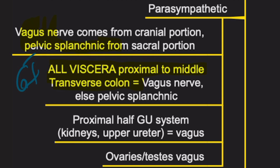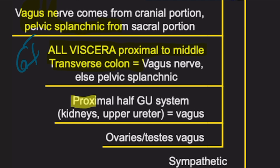With regards to the GU system for parasympathetics, the proximal half — so the kidneys and the upper part of the ureter — is going to be vagus nerve. The rest is pelvic splanchnic nerve. So if you get a question about parasympathetic innervation of the lower ureter, that's going to be pelvic splanchnic, not vagus. The ovaries and testes, if you remember from embryology, descended from a higher portion, so they're actually going to be vagus nerve.